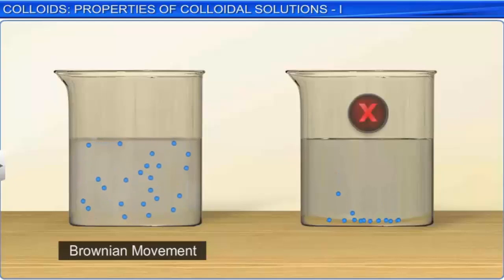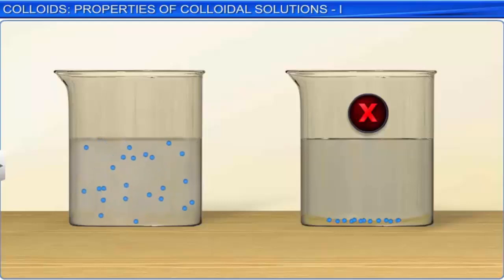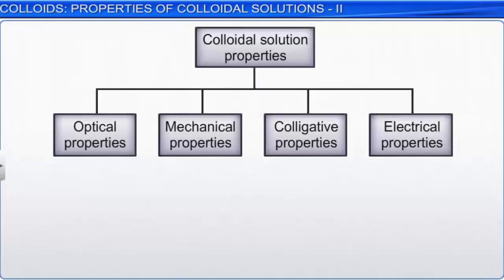Brownian movement is caused by the bombardment of the molecules of the dispersion medium against the colloidal particles of the dispersed phase from all sides with unequal and unbalanced forces. This movement opposes the forces of gravity and has a stirring effect, meaning that the colloidal particles resist settling rapidly to the bottom of the vessel. Hence, Brownian movement is responsible for the stability of a colloidal solution.